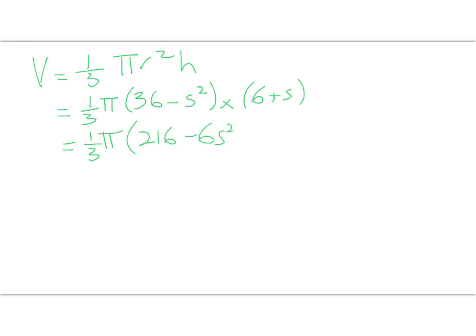We've got v is equal to one third pi r squared h, so that equals one third pi times 36 minus s squared times six plus s. We'll expand out the two brackets in the middle and get 216 minus 6s squared plus 36s minus s cubed. Might as well clean that up: one third pi times 72 minus 2s squared plus 12s minus one third s cubed.